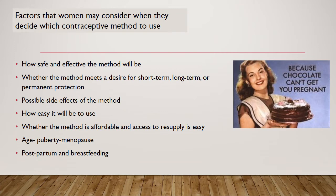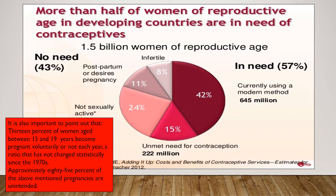Factors women may consider when deciding which contraceptive method to use include: how safe and effective the method will be, whether it meets a desire for short-term, long-term, or permanent protection, possible side effects, ease of use, affordability, access to resupply, and age and postpartum or breastfeeding status. More than half of women of reproductive age in developing countries are in need of contraceptives. Of approximately 1.5 billion women of reproductive age, 57% have been seen to be in need of contraception, of which 42% are currently using a method.